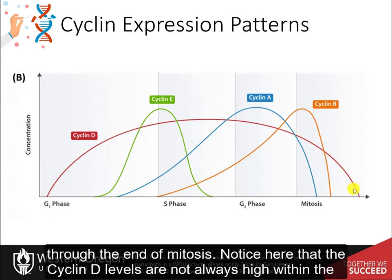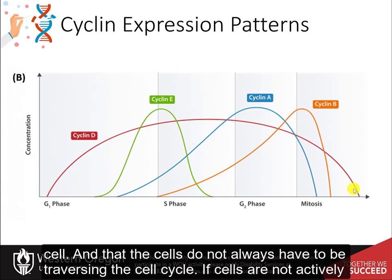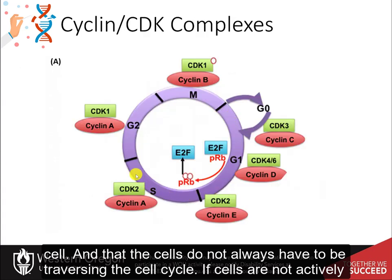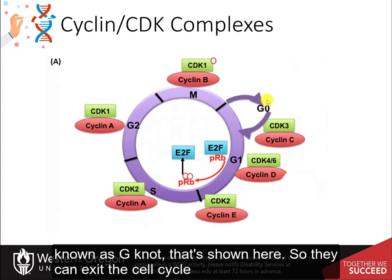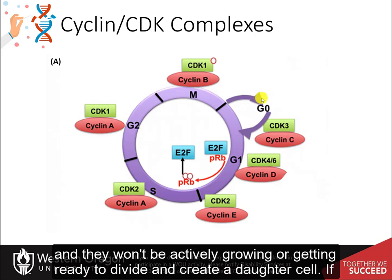Cyclin-D levels are not always high within the cell, and cells do not always have to be traversing the cell cycle. If cells are not actively undergoing progression through the cell cycle, they can be in a state of quiescence known as G0. They can exit the cell cycle and will not be actively growing or getting ready to divide and create a daughter cell.